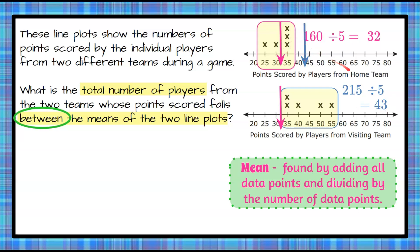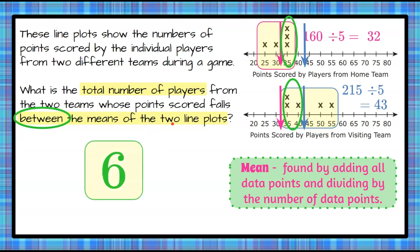We can see that three of the players on the home team scored between these two averages. Now let's put 43 on this line plot, and we can see on the visiting team there were also three players that scored between the means. So from the home team's mean of 32 to the visiting team's mean of 43, three players on the home team and three players on the visiting team scored between those two averages. Three plus three is six, so six of our players scored between the means of the two line plots.